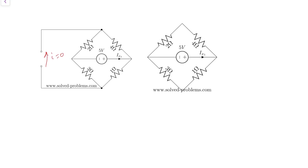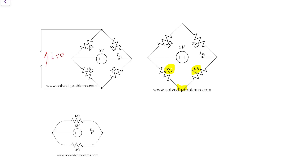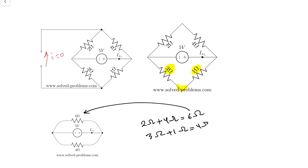In this circuit, we have the 2Ω and 4Ω resistors in series — they are connected at a node and in series. We also have 1Ω and 3Ω in series, connected at this node. So we can simplify further: 2Ω plus 4Ω gives 6Ω, and 3Ω plus 1Ω gives 4Ω.